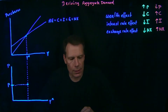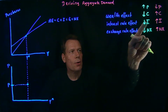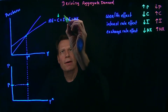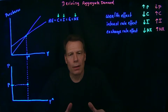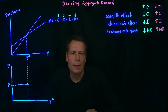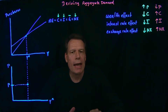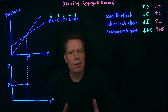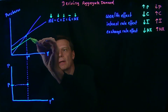Now suppose that the price level increases. We've seen that when the price level increases, consumption falls, investment falls, and exports fall — so each of those components of aggregate expenditure fall. Government purchases are exogenous to our model; they're determined outside of the model, so we'll simply hold them fixed. This means that the decreases in components of aggregate expenditure add up to a decrease in aggregate expenditure — the whole aggregate expenditure line shifts down, and we get a new aggregate expenditure curve.